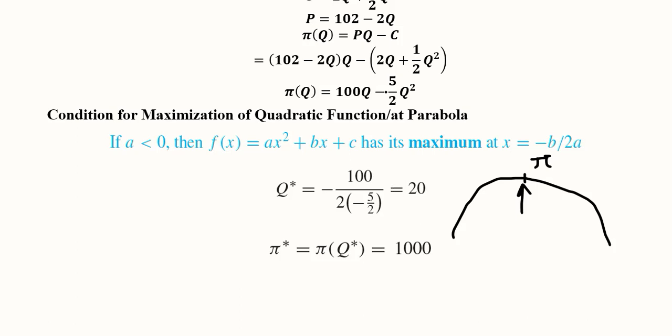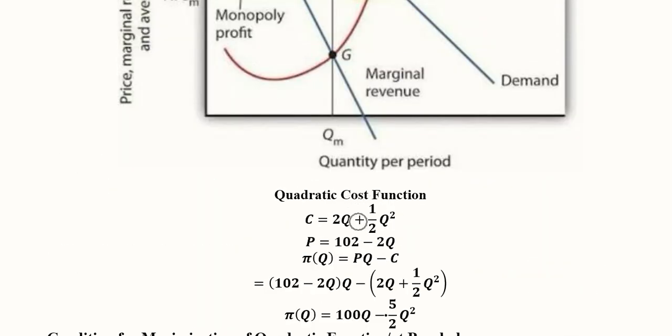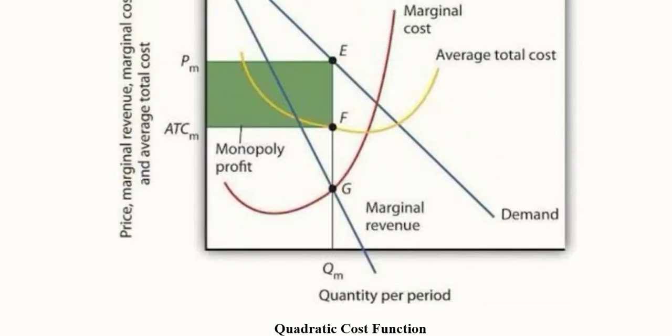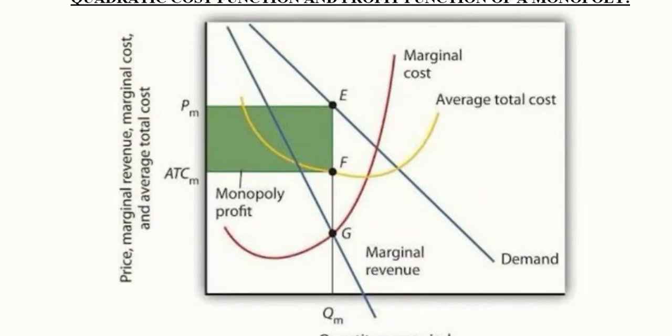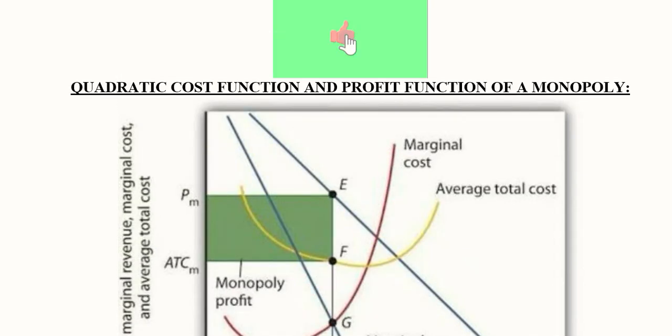The monopolist is going to produce 20 units for this. This is how a quadratic specification can be used in cost functions to find the equilibrium value of output, which in this case was a monopoly. This is how the application of quadratic functions has been done in an economic situation. Thank you.